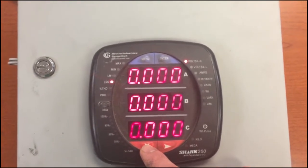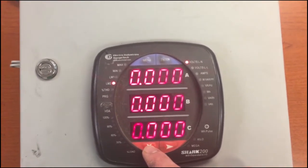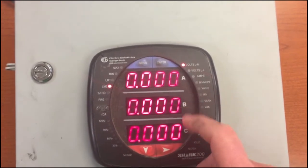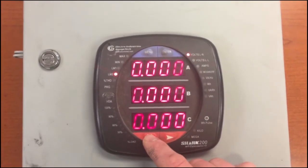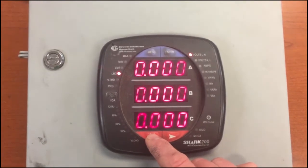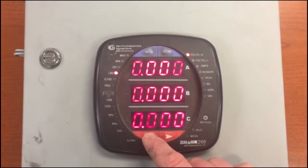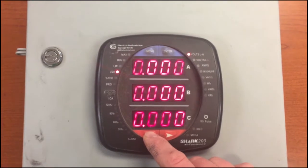Right now it's reading volts line to neutral and you have your A, B, and C phases here. This meter is not hooked up to anything so everything reads zero. Normally most plants would read 277 across all three phases.